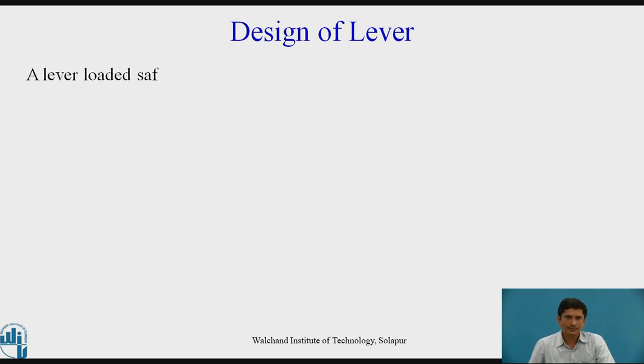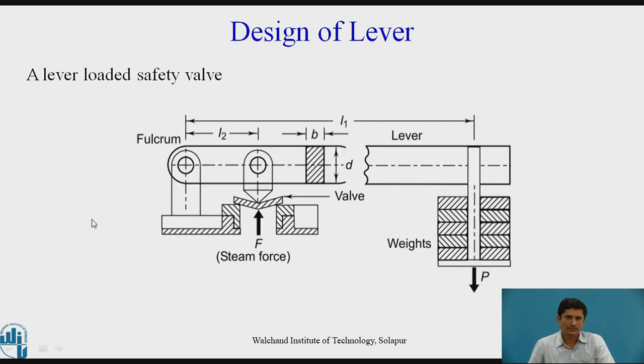Let us start with the problem. A lever loaded safety valve. This is the shell or the steam space of the boiler. The steam force is exerted upwards. At this fulcrum, this lever is allowed to swivel. The effort with the dead weights is applied at the free end. The length of effort from the fulcrum is taken as L1 and the length L2 is the length of the valve spindle to the valve. And the cross section is B into D, the rectangular cross section of the lever.